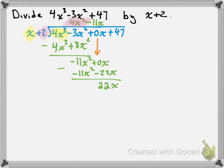We carry down the plus 47 and repeat. What times x gives us 22x? We multiply by 22, so we put plus 22 up top. When we multiply 2 by 22 we get 44, so fully multiplied out we get 22x plus 44. We subtract, which gives us a remainder of 3.